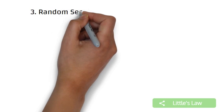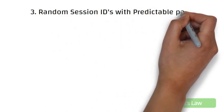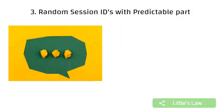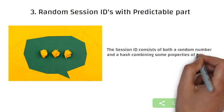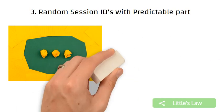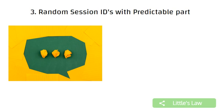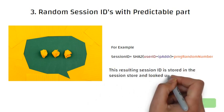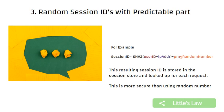Third, random session IDs with a predictable part. Here there is a slight modification of the random session ID generation method. The session ID contains a random number and a hash combining some properties of the user and server, such as the username and IP address — for example, user ID plus IP address with some random number. The resulting session is stored in the session store and looked up for each request. This is more secure than using a random number alone.